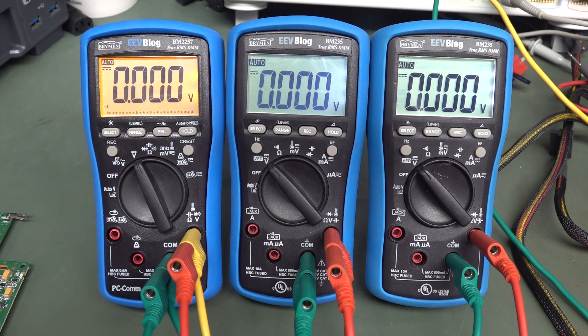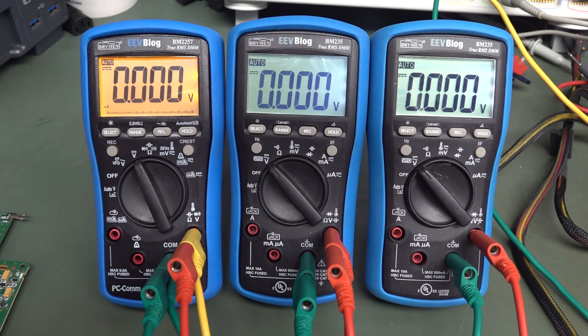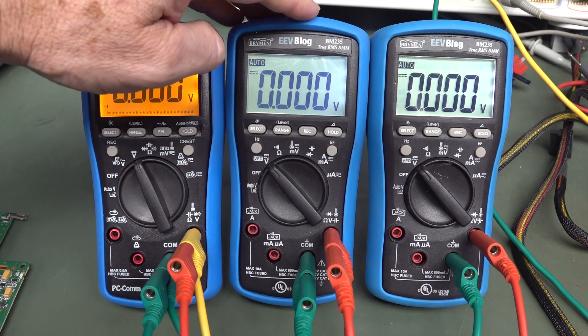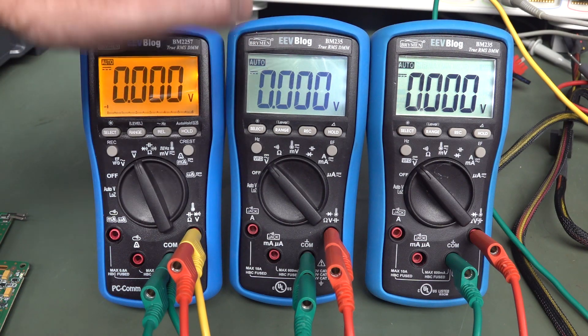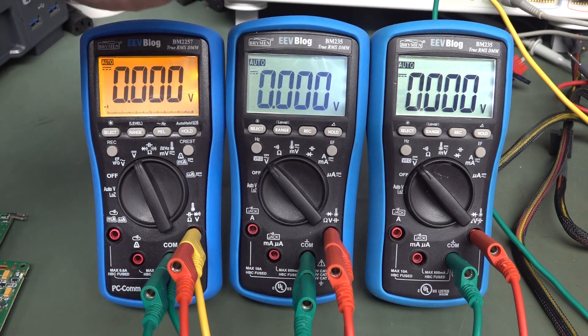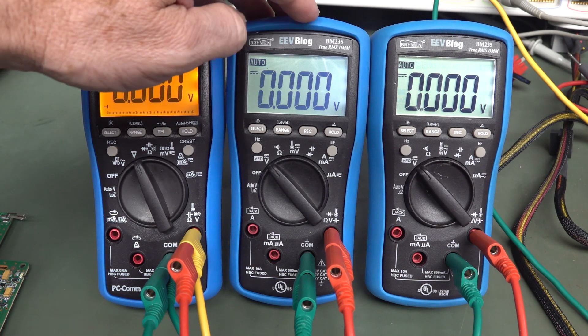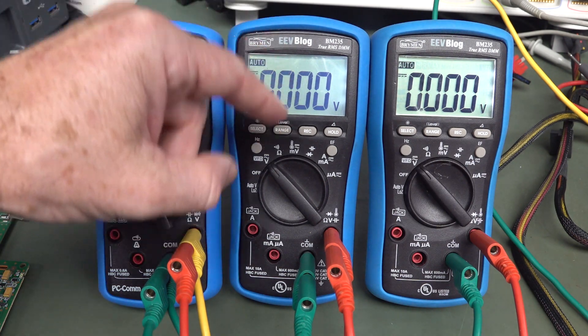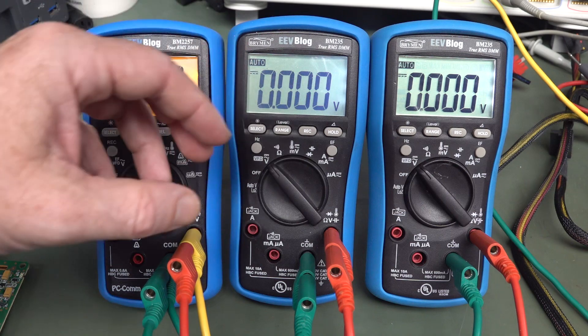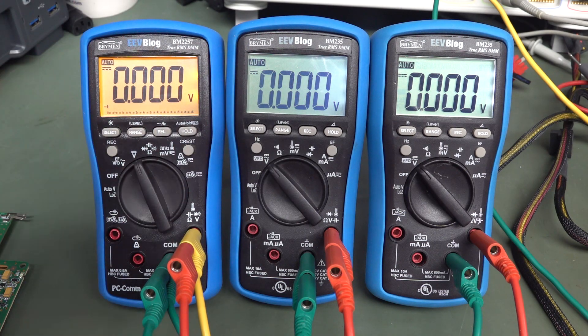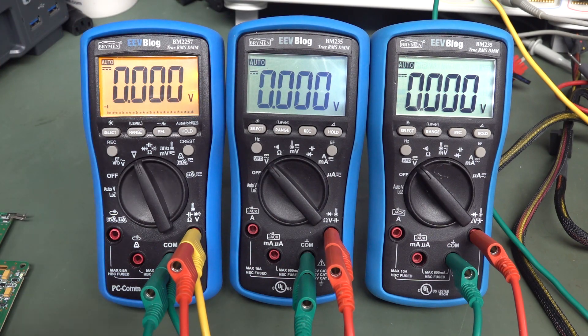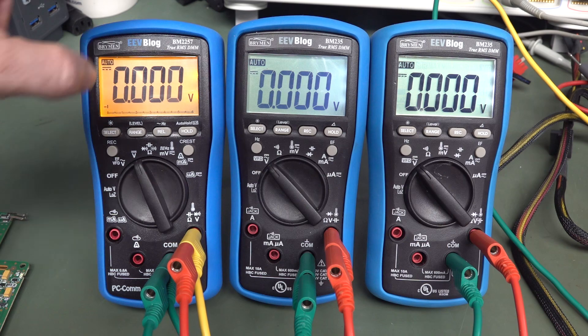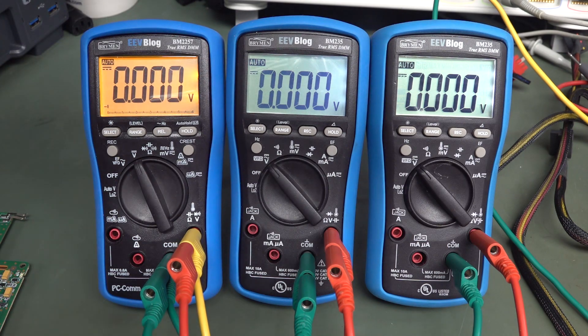It's buried down in one of the threads. They showed that the BM235, not sure what version they have, it wasn't the EEVblog one, it was the Breiman one, but should be identical. They showed that it had sort of like a lag on the display, sort of like a random kind of half second or something lag, like a freezing, almost freezing kind of thing. So I'm going to compare it with the BM2257, so let's go.